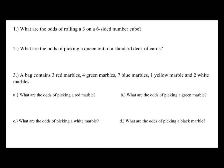So number 1 says, what are the odds of rolling a 3 on a 6-sided number cube? So just like the example, there's 1 three on a number cube, there are 5 numbers that are not a 3. 1 to 5, but 1 plus 5 equals 6.